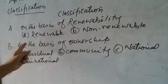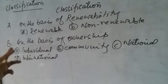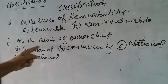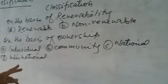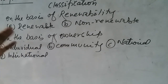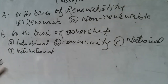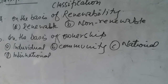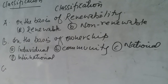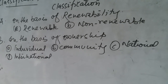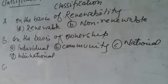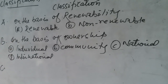Second classification is on the basis of ownership. On this basis, resources can be classified into four types: individual resource, community resource, national resource, and international resource. Individual resource is the resource which belongs to a single person, like our bank balance, our knowledge, our intelligence, our own character. This is our individual resource — no one can take it.